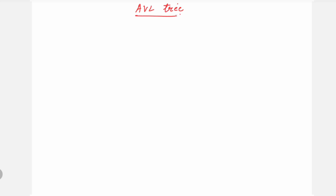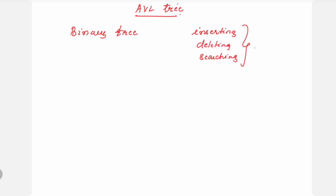Why exactly are we going for the AVL tree? Before that, start with the binary tree. What we have seen in the binary tree is that elements are not organized, not ordered, and inserting, deleting, or searching an element are too difficult. The next step is to transform it into a binary search tree.